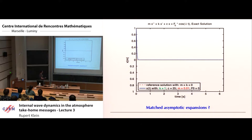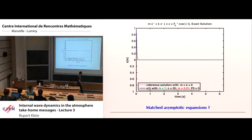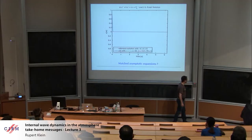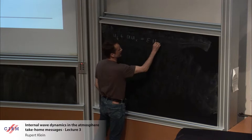Who knows what matched asymptotic expansions are? Let me give a quick blackboard example to build intuition. Suppose we look at the advection-diffusion equation: u_t + a·u_x = ε·u_xx, where x is in [0,1], t ≥ 0, a is positive and constant. We are interested in ε being very small.